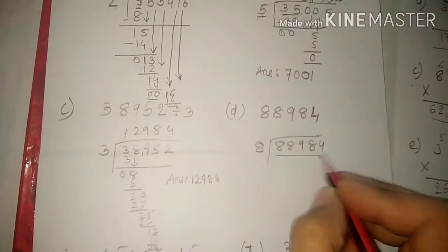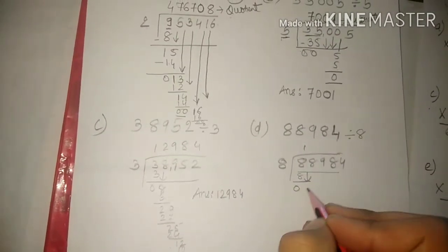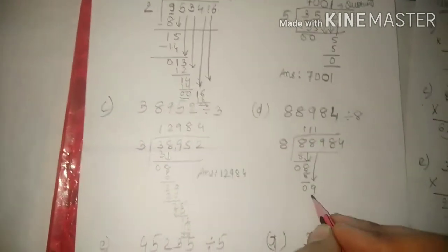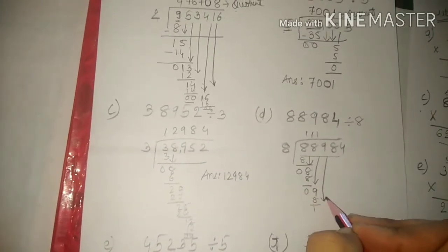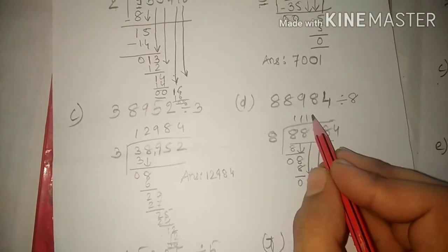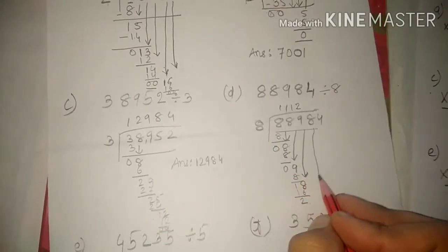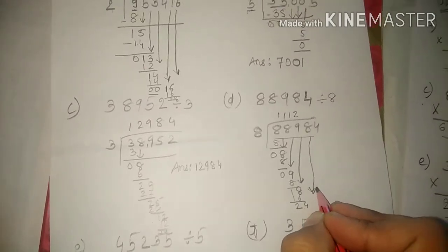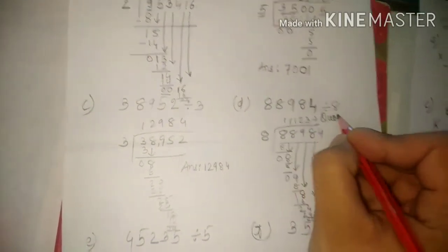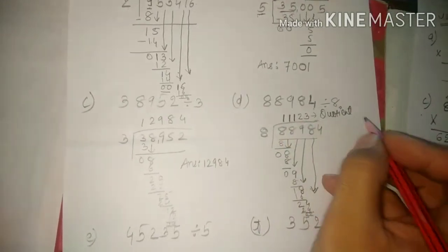This big number has to be divided by eight. Eight ones are eight, remainder zero. Eight comes down — eight ones are eight, remainder zero. Nine comes down — eight ones are eight, remainder one. Eight comes down making eighteen. The nearest number in the table of eight is sixteen — eight twos are sixteen, remainder two. Four comes down, making twenty-four. Eight threes are twenty-four, remainder zero. So the answer is 111123.